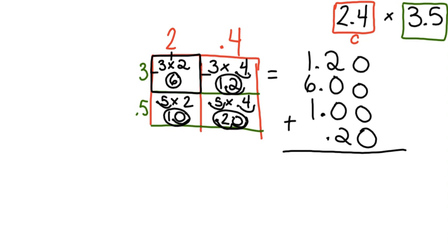The last step is to add them all together. 0 plus 0 plus 0 plus 0 is 0. 2 plus 0 plus 0 plus 2 is 4. Since this is addition, I just carry down the decimal place. 1 plus 6 plus 1 is 8. My answer to 2 and 4 tenths times 3 and 5 tenths is 8 and 40 hundredths, or 8 and 4 tenths.